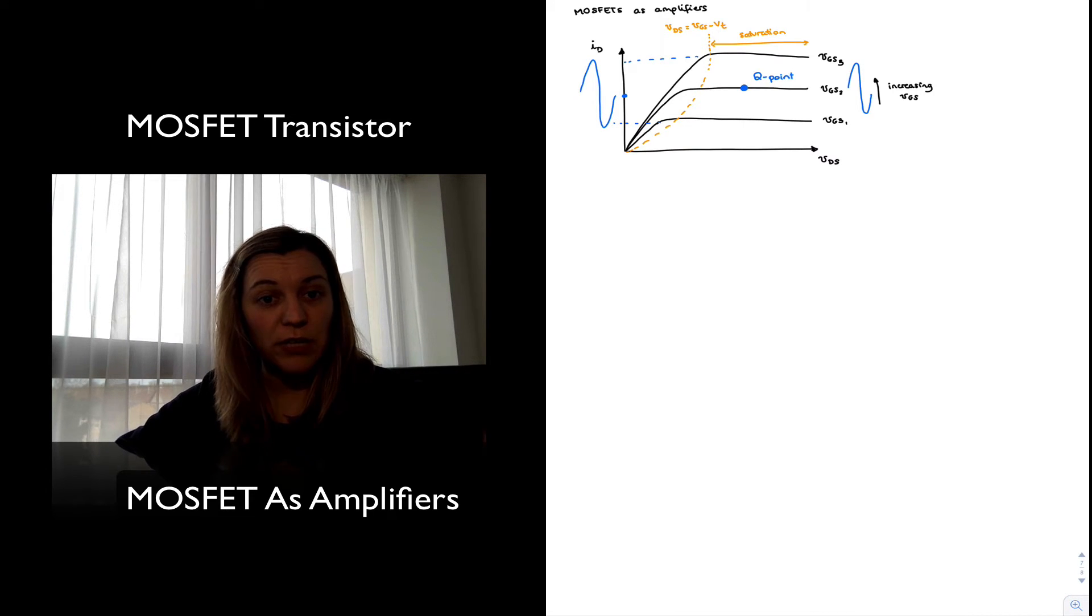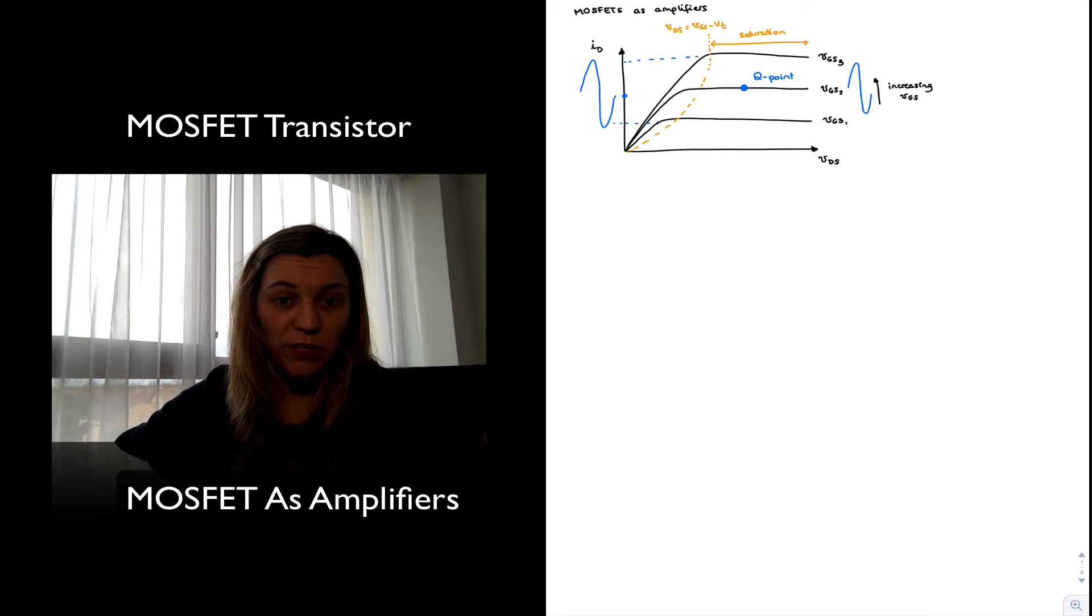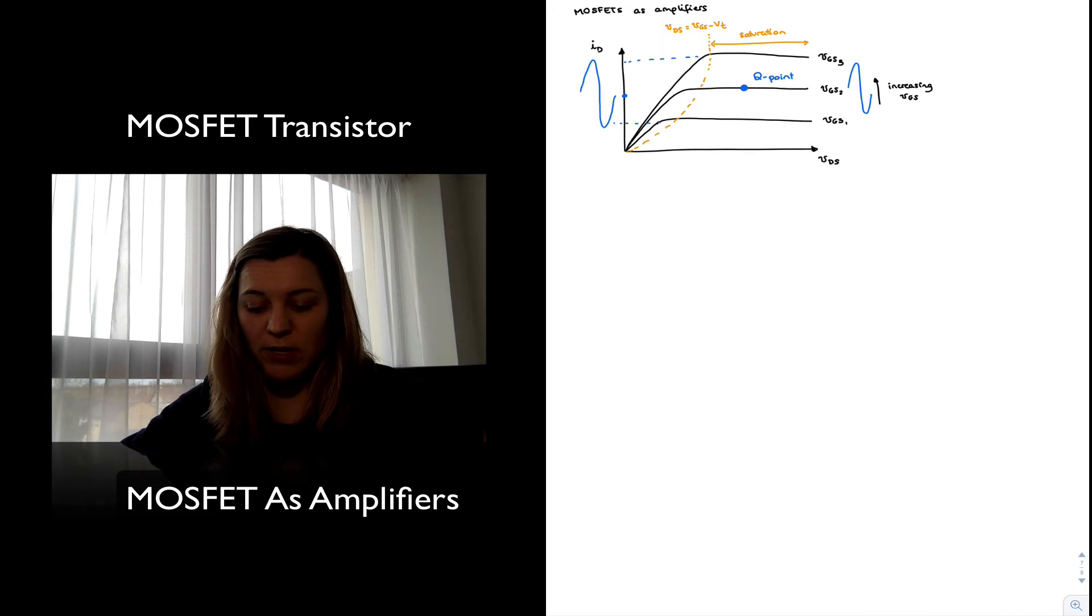Because again, because of the transconductance, a change in the input voltage will give me a change in the input current. Because of the square relationship between the current and the input voltage, in the case of the saturation region, I will have that as my VGS goes up and down, my ID will go up and down with a quadratic relationship to VGS.